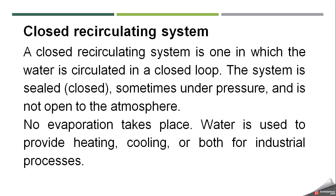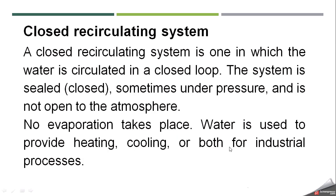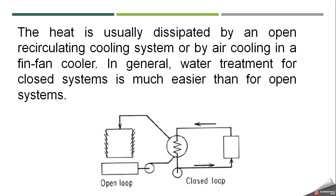A closed recirculating system is one in which water is circulated in a closed loop and the system is sealed — no leakage and no replacement of water takes place. Sometimes the system is under pressure and is not open to the atmosphere. No evaporation takes place and the water is used to provide heating, cooling, or both for industrial processes. The heat taken by the closed system is usually dissipated by an open recirculating cooling system or by air cooling in a fin fan cooler.